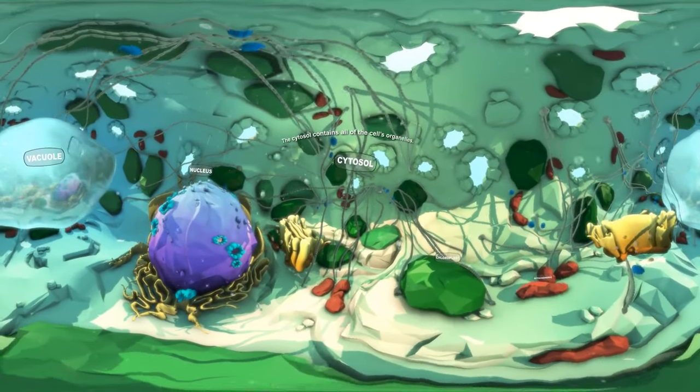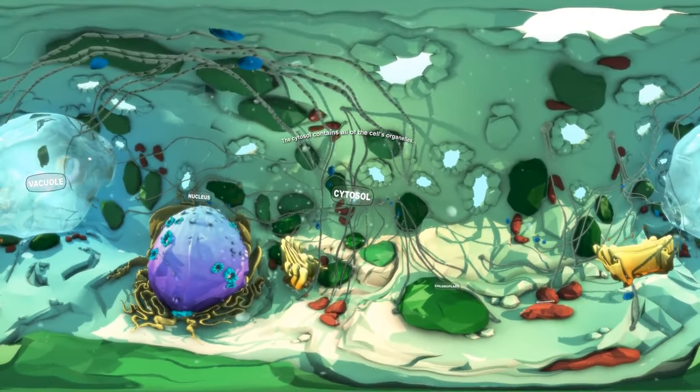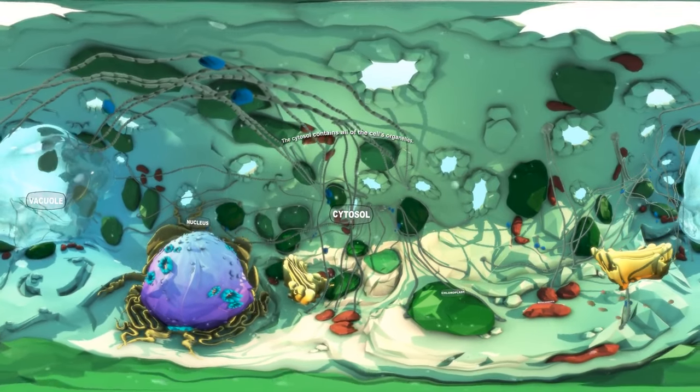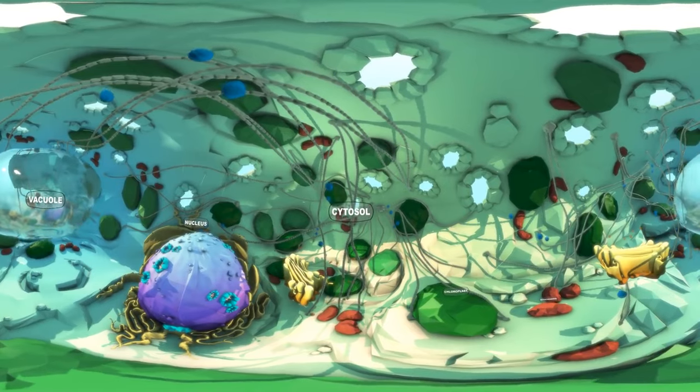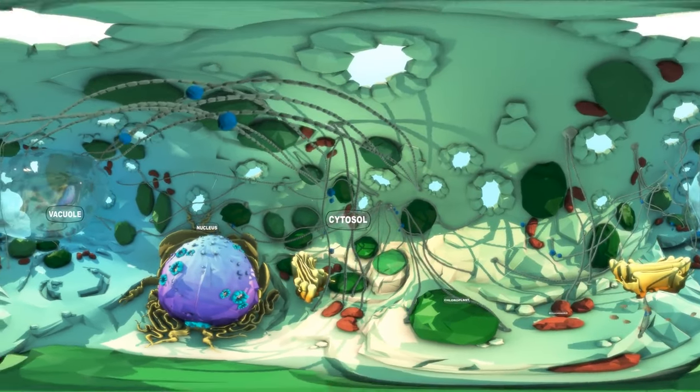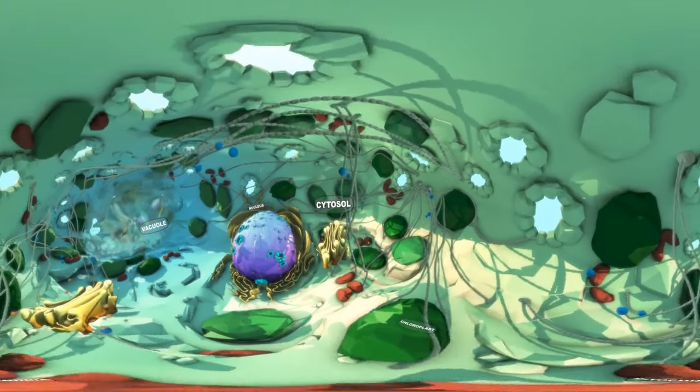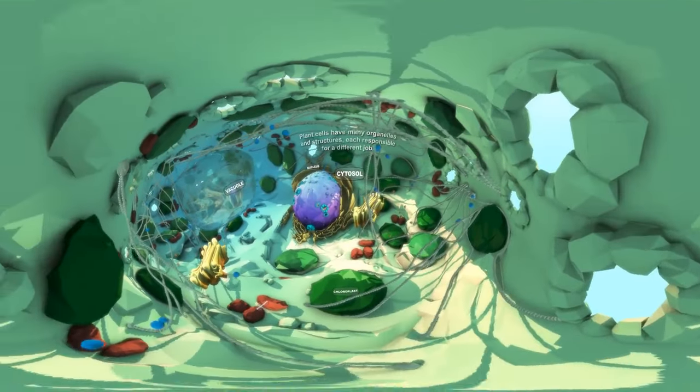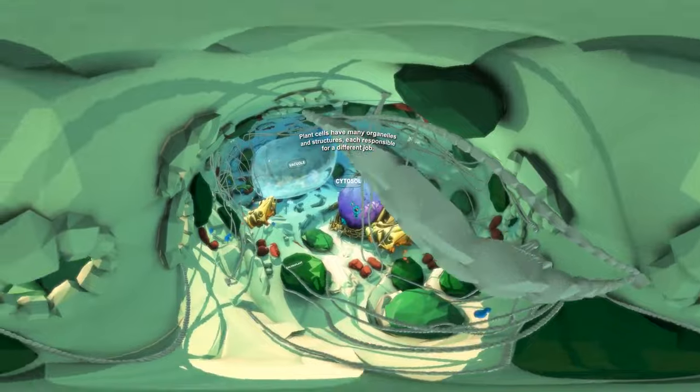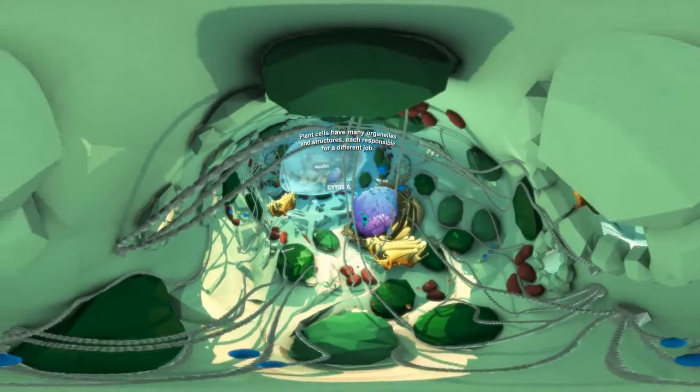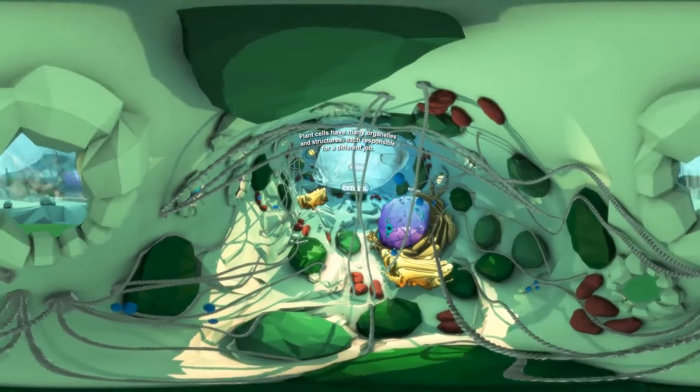All of a cell's organelles float around in the cytosol, a jelly-like substance. A plant cell contains many organelles and structures, each of them responsible for a different job within the cell.